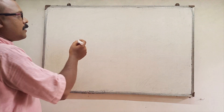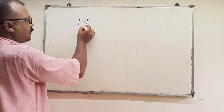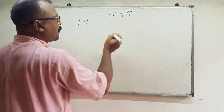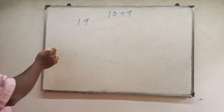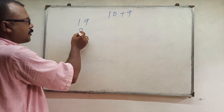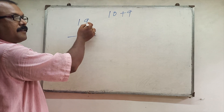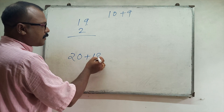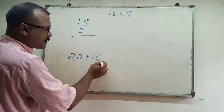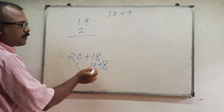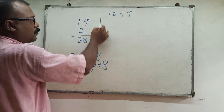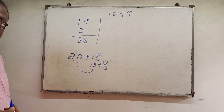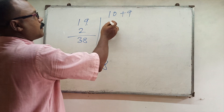The next step is 19. 19 is 10 plus 9. 19 ones are 19. 19 twos are 20 plus 18. 18 is 10 plus 8, so 38.